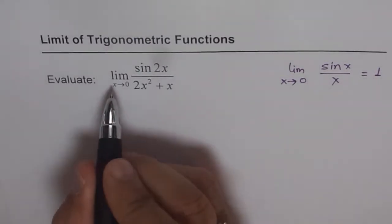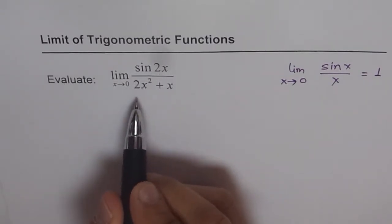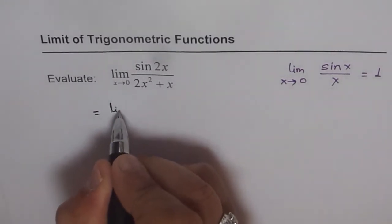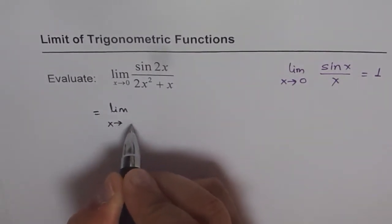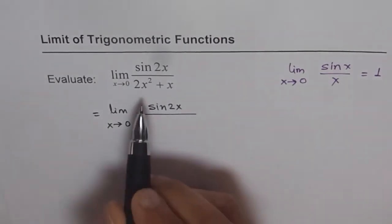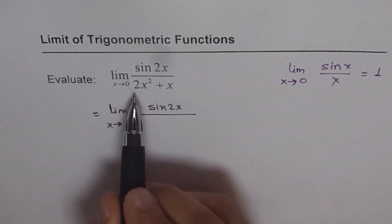We have limit x approaching 0 for sin(2x) divided by 2x² + x. I can write this as limit x approaching 0, numerator sin(2x), and in the denominator I will factor out 2x.